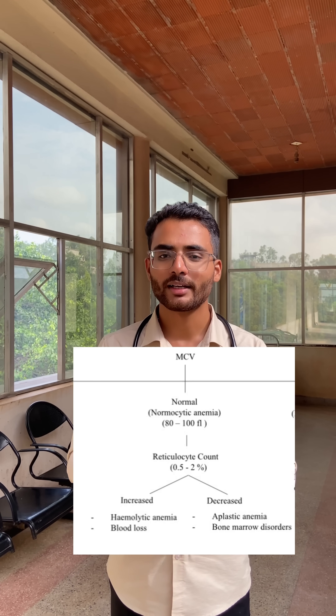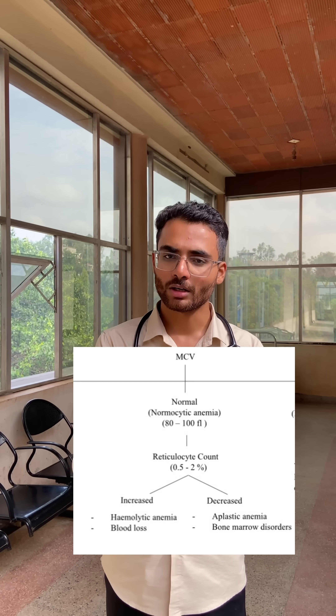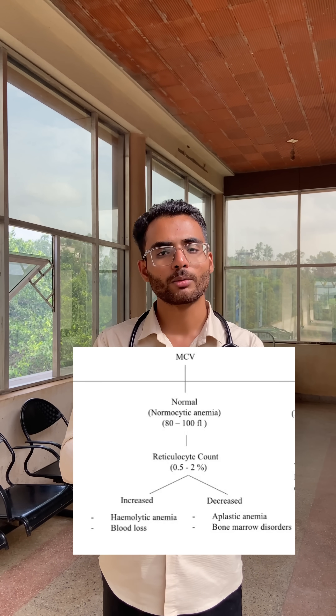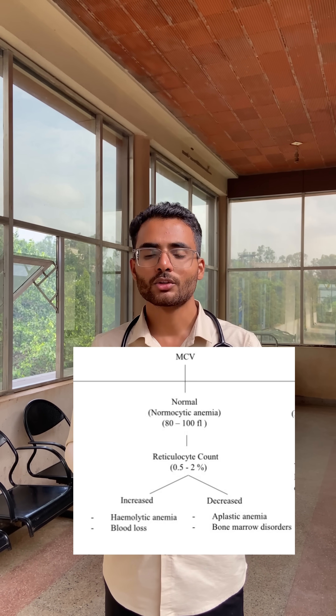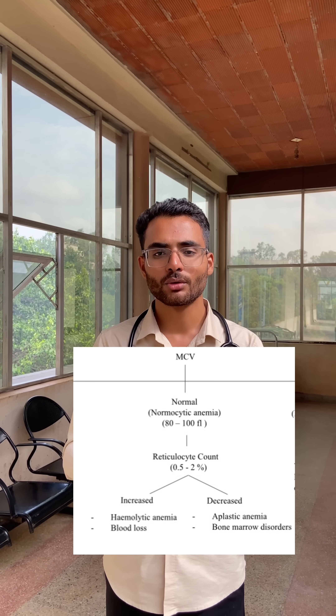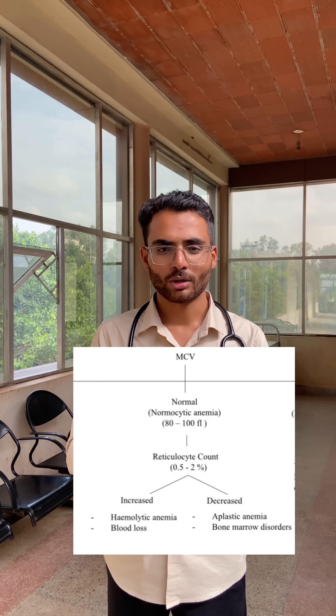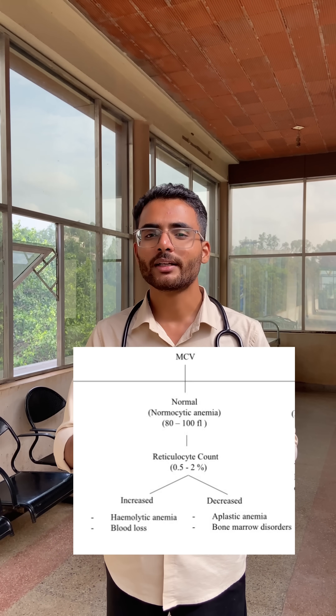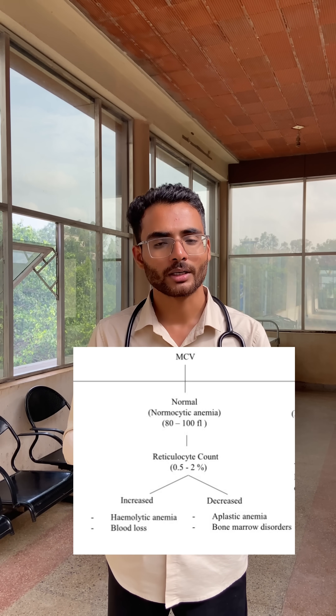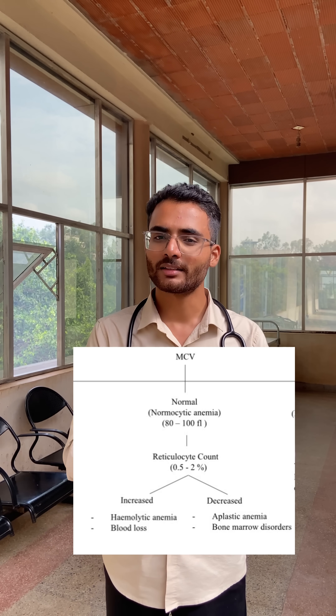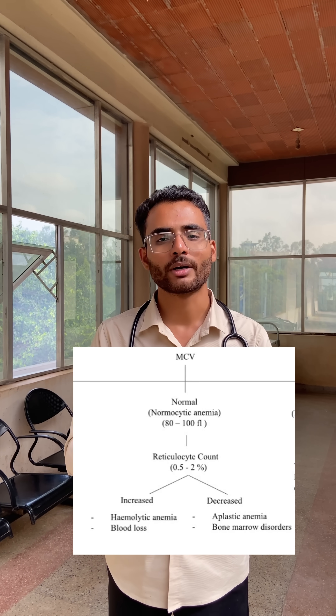If the MCV is normal — normocytic anemia — it can be due to blood loss or bone marrow disorders. The next thing you should look for is reticulocyte count. Reticulocyte count will be increased in cases of blood loss and decreased in cases of bone marrow disorders.